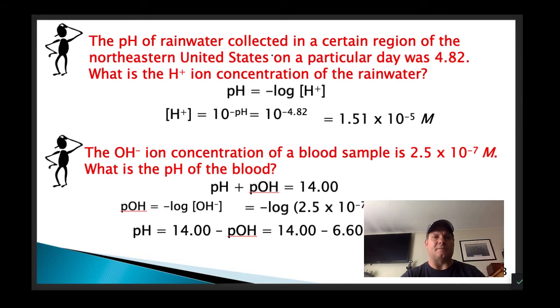Let's try these problems. The pH of rainwater collected in a certain region in the northeastern United States on a particular day was 4.82. What is the hydrogen ion concentration of rainwater? Well, we know that, based on our previous slide, that pH is the negative log of the hydrogen ion concentration and hydrogen ion concentration is 10 to the negative pH. So if I take 10 to the negative 4.82, so now I'm using that 10 to the X button on my calculator, I punch that, I put negative 4.82 equals, my calculator will spit out 1.51 times 10 to the negative 5th. That is my hydrogen ion concentration. So I went from pH back to a hydrogen ion concentration.